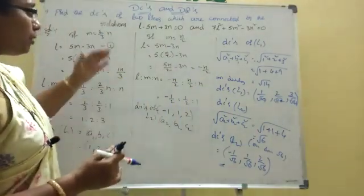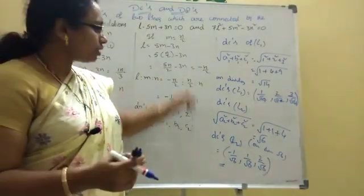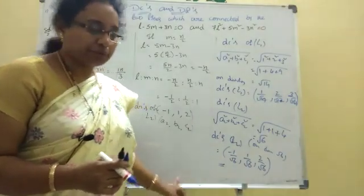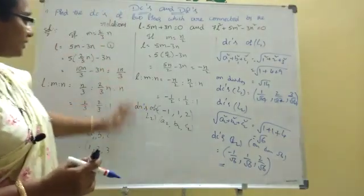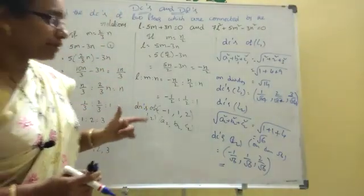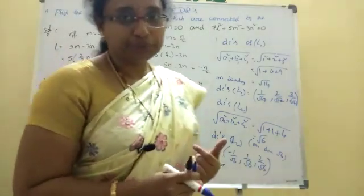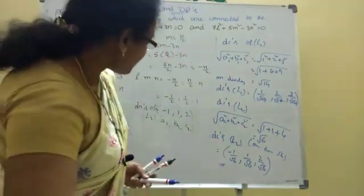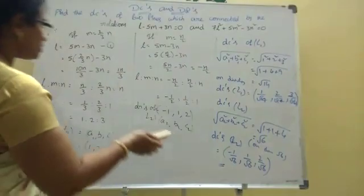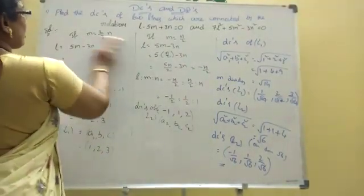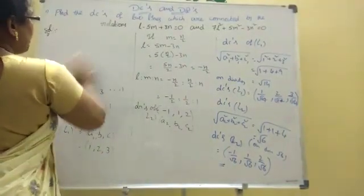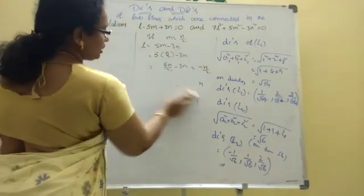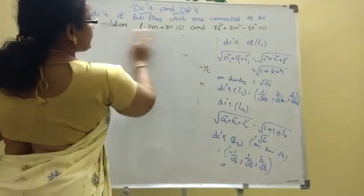7 marks important problems are the cube model and compulsory DCDRs. Now we will start the cube model. I already discussed the cubes, and the cube problem involves the diagonals — we find the DCDRs of the cube's diagonals.